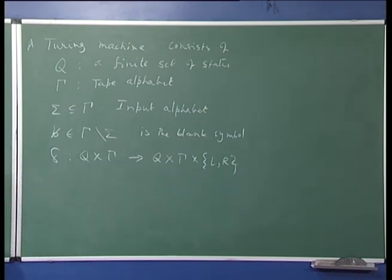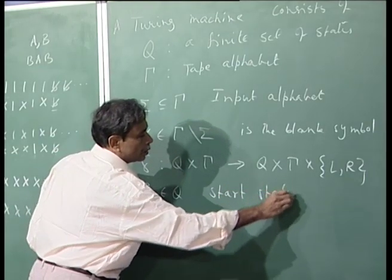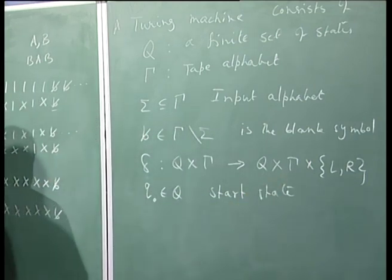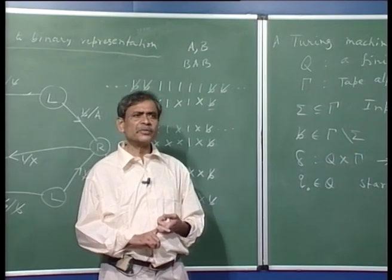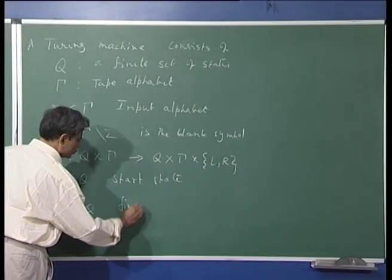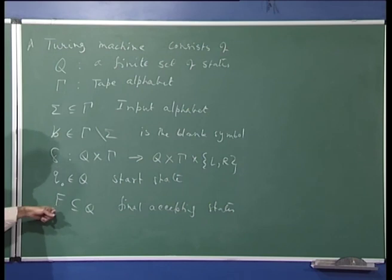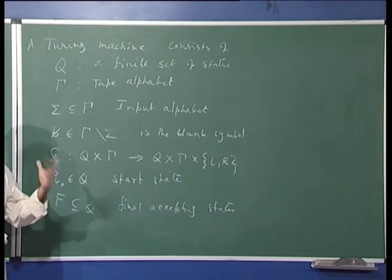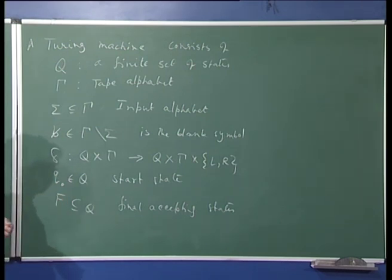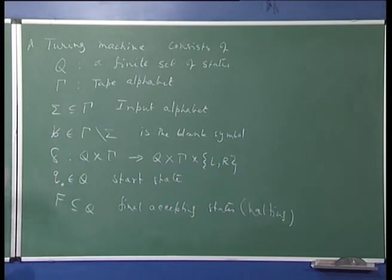Then you have of course a special state which is the start state. So, q0 which is an element of Q is the start state of the Turing machine. And in the context of language recognition we should have some final accepting states — some F which is a subset of Q, the final accepting states. And in these states, once the machine reaches one of them, then the machine halts — that is the convention we have. So, final accepting states are all halting. So, if you specify all these, then you specify a particular Turing machine.